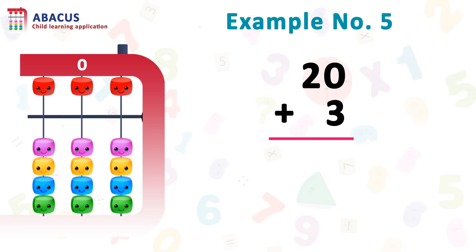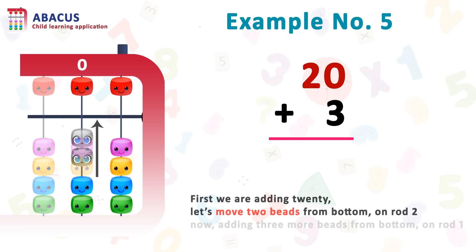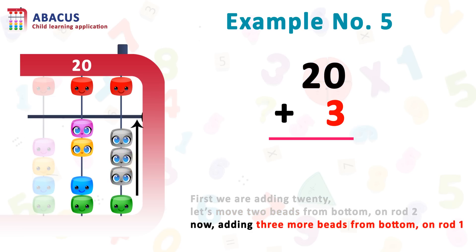So first, we are adding 20. For 20, let's move 2 beads from bottom to top on rod 2. Now for 3, move 3 beads from bottom to top on rod 1. And here we got the answer. It's simple. The answer is 23.